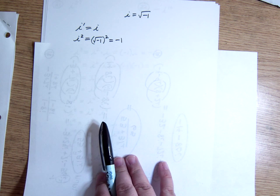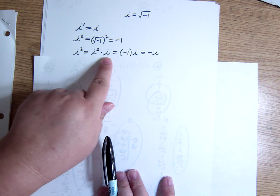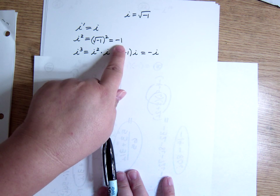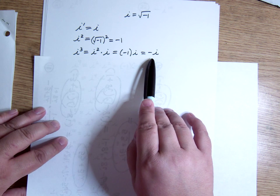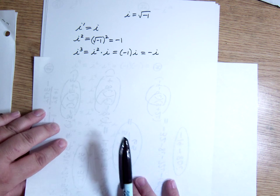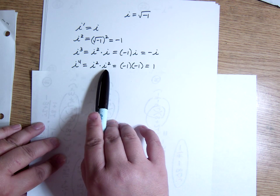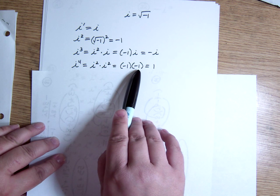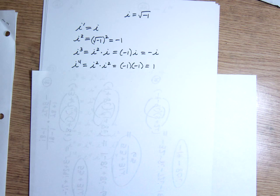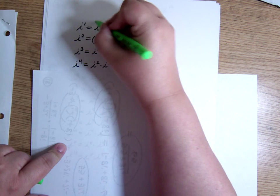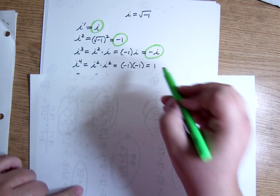i to the third, then, I can think of as i squared times i. So that's negative 1 times i, which is negative i. And i to the fourth, I can think of as i squared times i squared, which is negative 1 times negative 1, which is 1. So what's happening here is I've got i, negative 1, negative i, and 1.